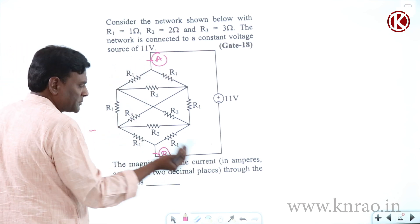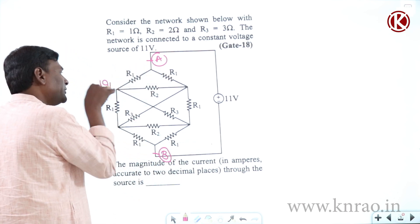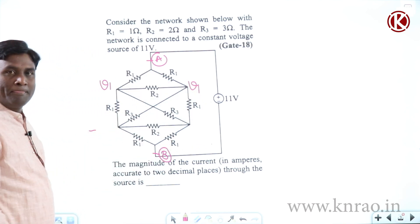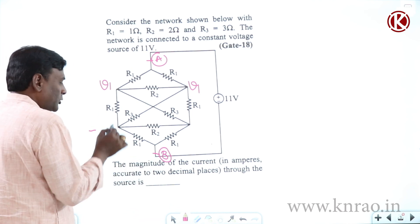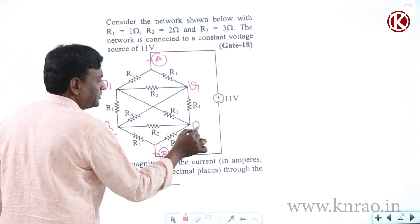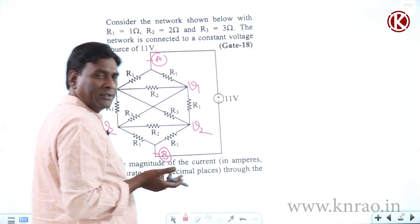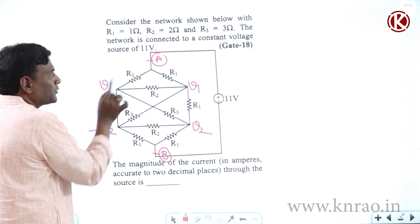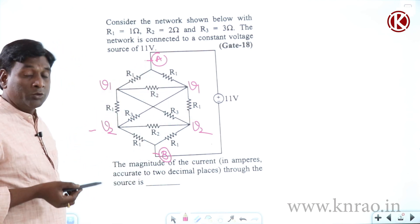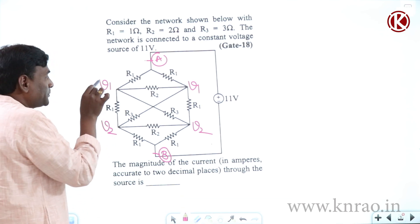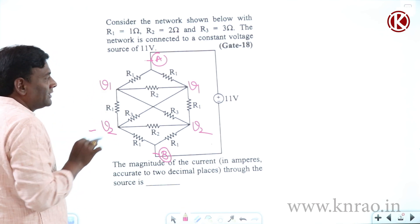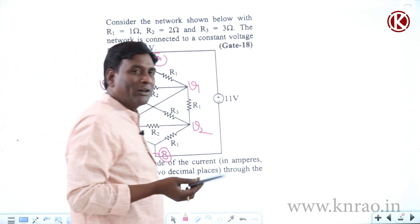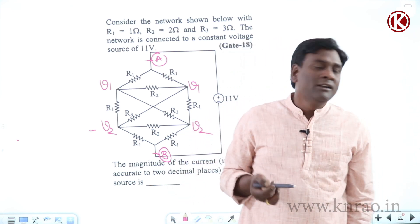So with respect to any point, with respect to B for example, if it is V1 after R1, after R1 this should be V1, right. Now with respect to B, if it is V2, it should be V2. Problem solved, that's it. Because with respect to A to V1, R1 is there. The both are connected in parallel.